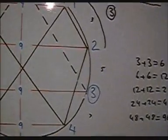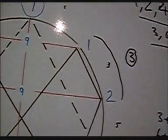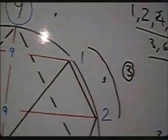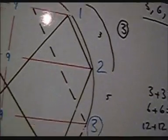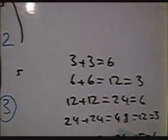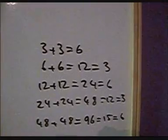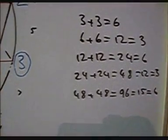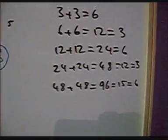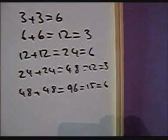Another way to look at the oscillation between 3 and 6 that I was showing between the doubling circuit, this circuit, adding between them, and getting 3, 6, 3, 6, 3, 6, is just look at it like this. 3 plus 3 equals 6. 6 plus 6 equals 12, which is 3, 1 plus 2. 12 plus 12 equals 24, which is 6. 24 plus 24 equals 48, which equals 12, which equals 3.